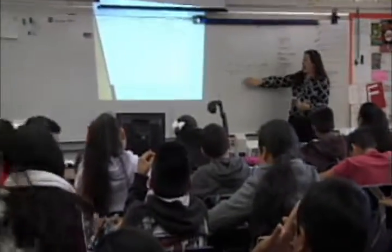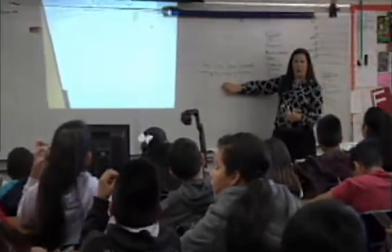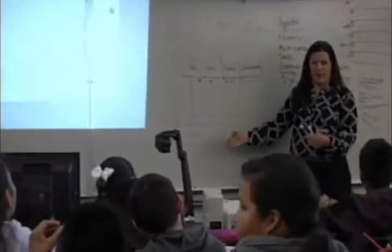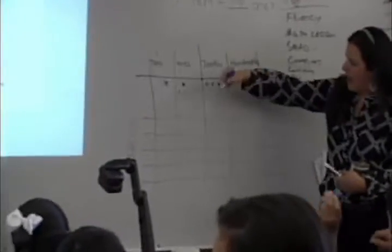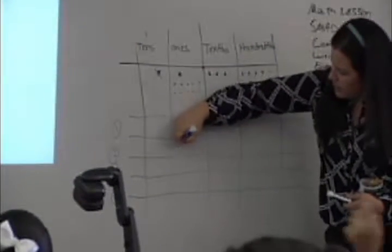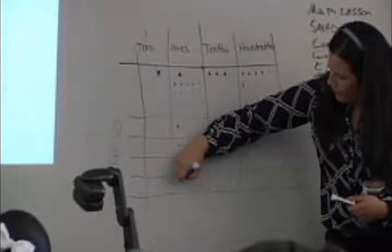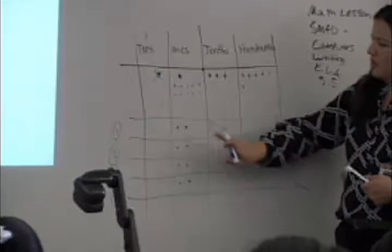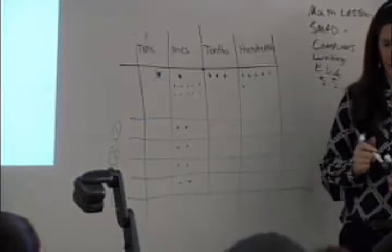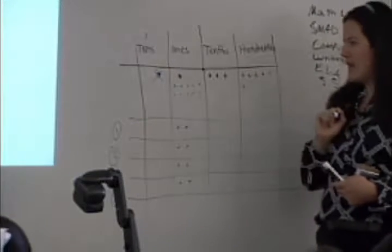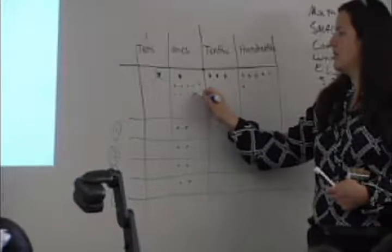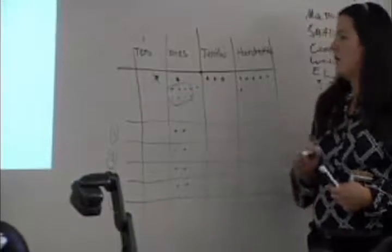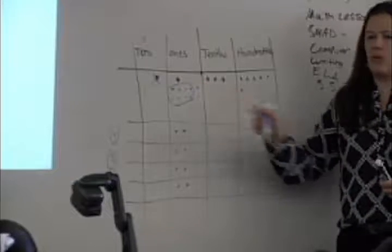'Now let's do the division. I have 11 ones. I'm going to split them up into my four groups. Help me count.' The class counts together: 'One, two, three, four, five, six, seven, eight. Stop there. Do I have enough to keep going?' Students: 'No.' Teacher: 'How many did I use? Eight. What do I do with these three ones?'